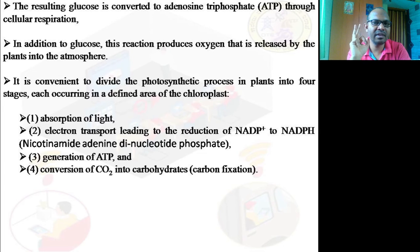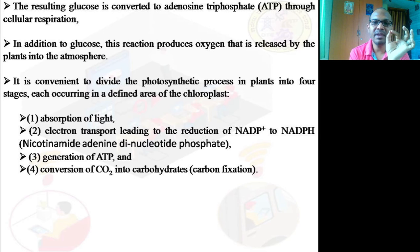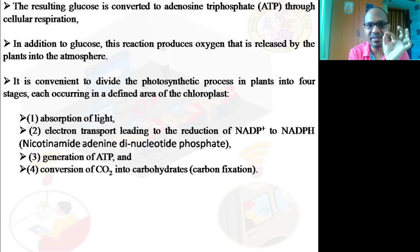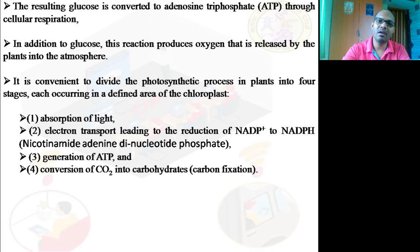Three important topics often asked in exam questions are: light reaction, dark reaction, and carbon fixation. During the fourth stage of photosynthesis, the ATP converts carbon dioxide — available in nature — into carbohydrates and releases oxygen. This process is called carbon fixation.